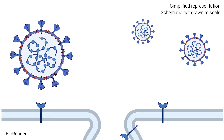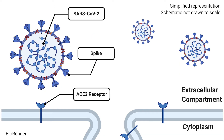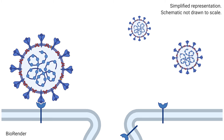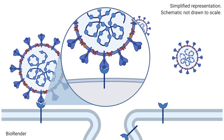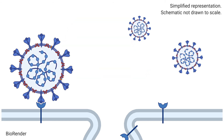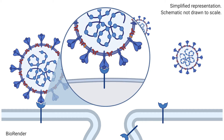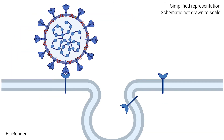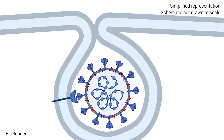In real life, the spike protein of SARS-CoV-2 interacts with the human ACE2 receptor. This interaction allows the virus to enter the cell and cause infection.